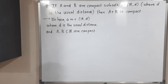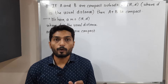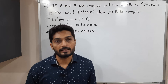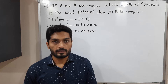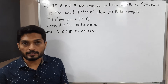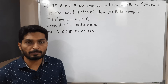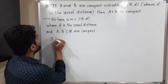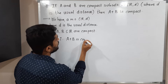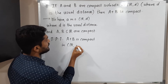Hi everyone. In this video we are going to discuss this result: if you have any two compact subsets of ℝᵈ, where d is a usual distance, then A plus B is also compact. The given information is that we have a metric space ℝᵈ where d is the usual distance, and A and B are compact subsets of ℝᵈ. We need to prove that A plus B is compact in ℝᵈ.